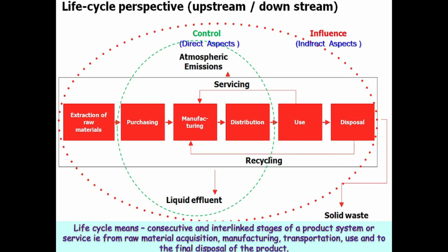This slide is an example of life cycle perspective — direct and indirect aspects — and which activities you can control or influence in your business process. As we have already seen, life cycle starts from extraction of raw materials, purchasing, manufacturing, distribution of product, use of product, and disposal of product. We need to identify the respective aspects in all the above said activities. Management can control only the direct aspects in the purchase, manufacturing and transportation activities. Whereas the upstream indirect aspects in the extraction of raw materials, and downstream activities like use of product and disposal of product — management has no direct control but can only influence and guide them.